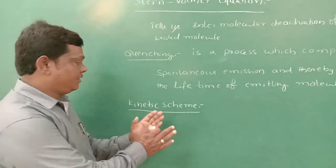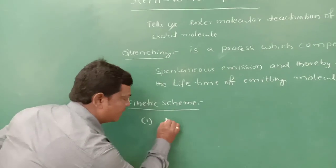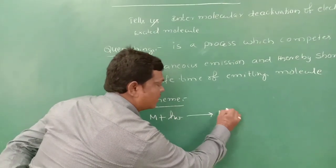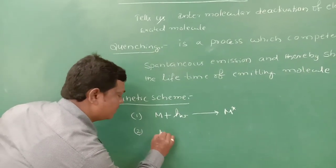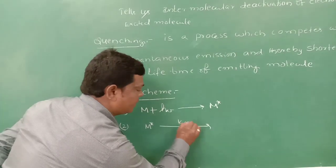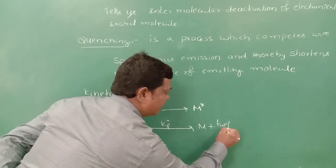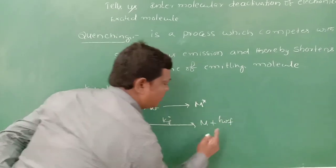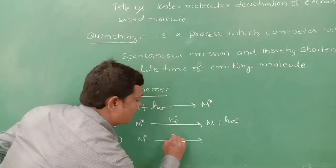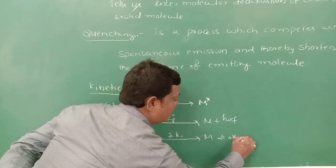The kinetic scheme for quenching has four steps. First, light interacts with a molecule to form an electronically excited molecule M*. Second, the electronically excited molecule M* emits with rate constant K₀F, producing radiation hν. Third, M* undergoes all other decay pathways with rate constants summation of Kᵢ.